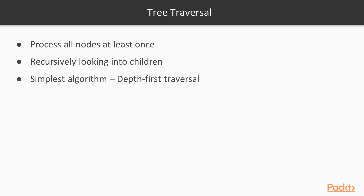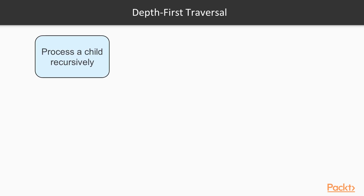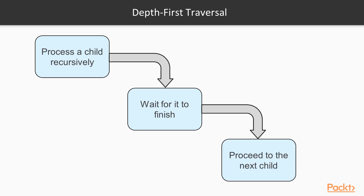Tree traversal is an algorithm to visit or process all nodes of a tree exactly once. This obviously involves recursively looking into the children of the nodes. The order in which the children are processed depends on the particular algorithm we use. The simplest algorithm for traversing a tree is the depth-first traversal. In the depth-first traversal, we process every child of a node recursively and wait for it to finish with all its descendants before proceeding to the next child. To understand depth-first search, we have to understand what a subtree is. A subtree is a node with all its descendants up to the leaves.